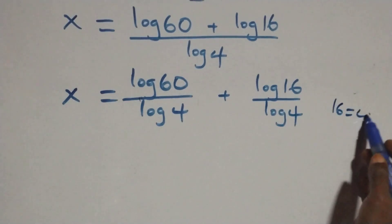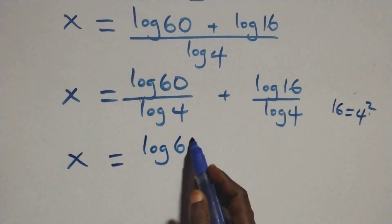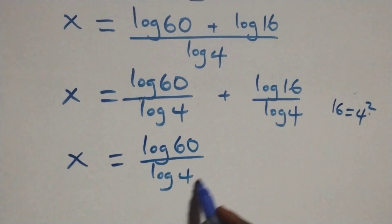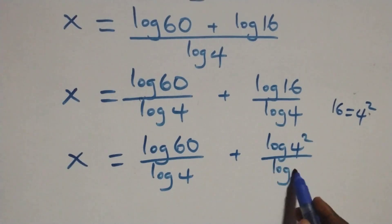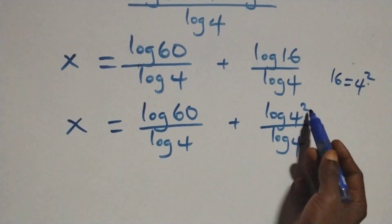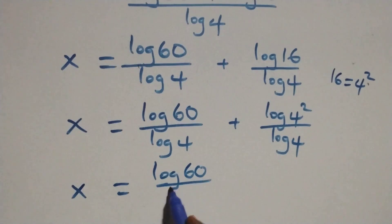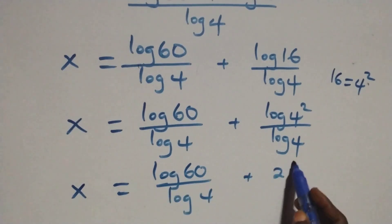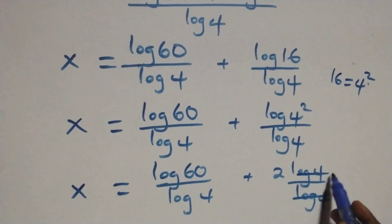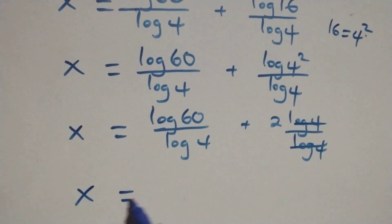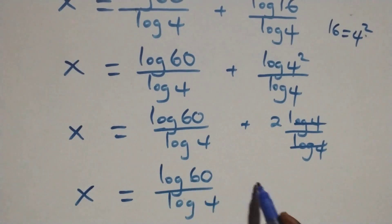Here, sixteen can be written as four times four, that is four squared. So x equals log sixty over log four plus log of four squared over log four. We apply the power rule of logarithms, giving x equals log sixty over log four plus two log four over log four. Log four cancels, leaving x equals log sixty over log four plus two.